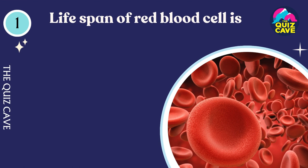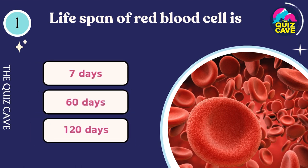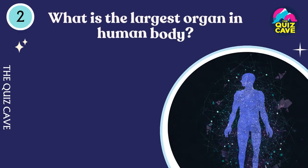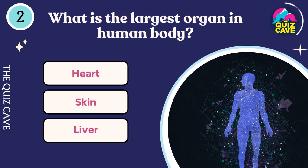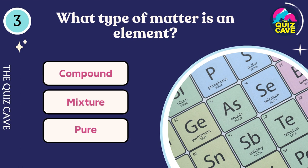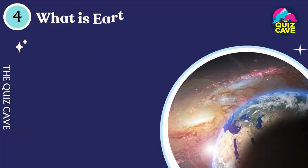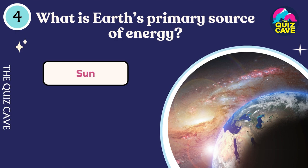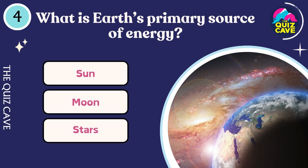Lifespan of red blood cell is... 120 days. What is the largest organ in human body? Skin. What type of matter is an element? Pure. What is Earth's primary source of energy? Sun.